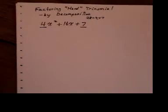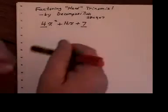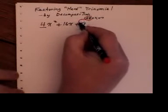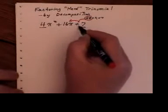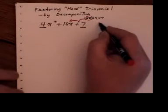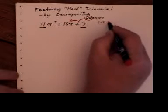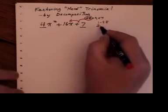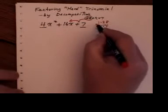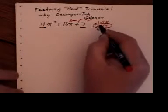Now, what you're going to do in both systems is work with this 28 here and see what multiplies to make 28 and adds to make that. So, it has to multiply to make 28 and add up to 16. Well, I know 1 times 28 is 28, 2 times 14, and 4 times 7. And you can see that these numbers, 2 and 14, add up to 16.